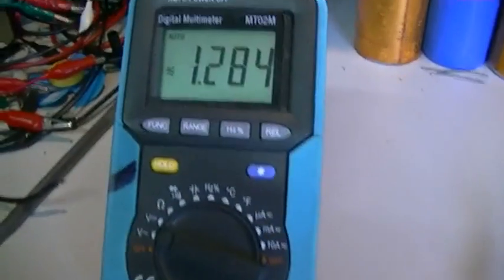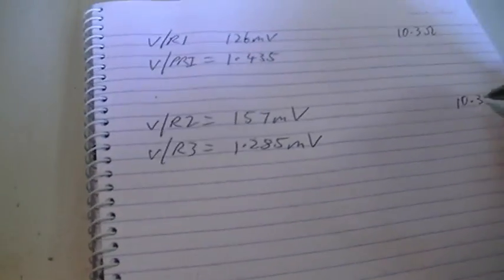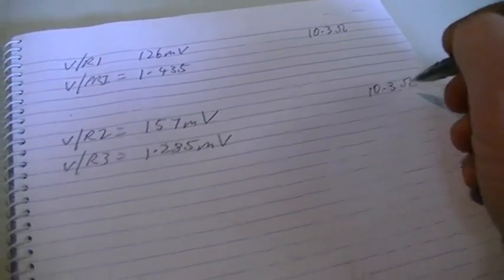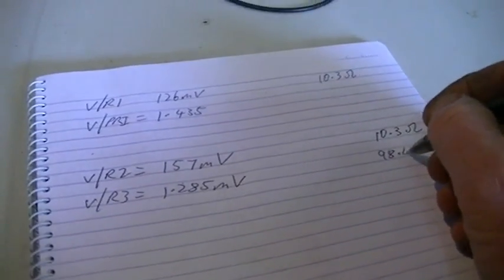And then we will measure V over R3 - 1.285, 1.285 millivolts. And we know R2 is also 10.3 ohms, and we know R3 is 98.4 ohms.